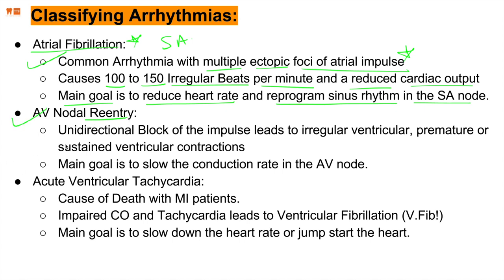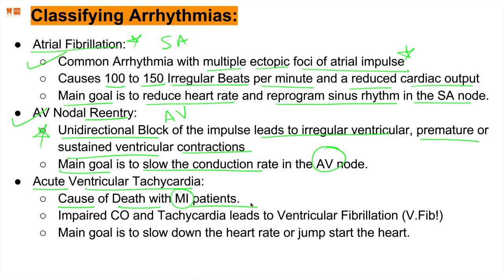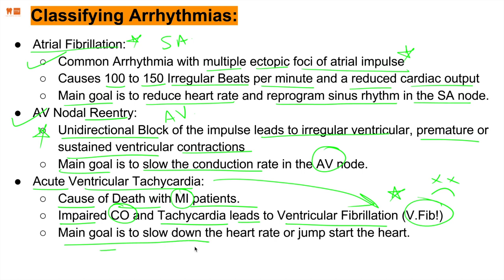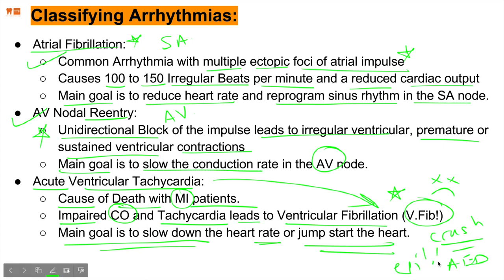AV node re-entry — the unidirectional block scenario — leads to irregular and premature or sustained ventricular contractions. The main goal is to slow down conduction to prevent re-entry. Acute ventricular tachycardia is generally a cause of death in patients with MI — myocardial infarction — with impaired cardiac output, and tachycardia that progresses to ventricular fibrillation. That's when people die. The main goal is to slow down the heart rate and jumpstart the heart, which is why in movies they say 'V-fib, get a crash cart, give an AED and a pen of epi.'